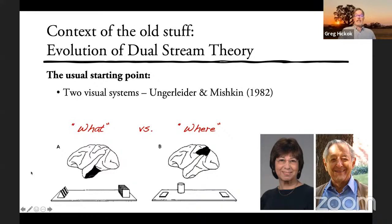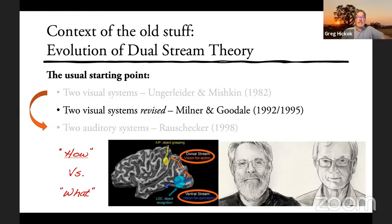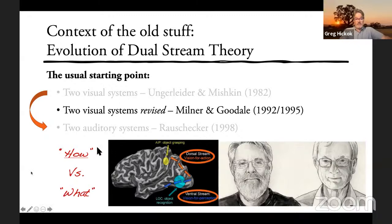This led to a similar view in the auditory system. Joseph Rauschecker proposed a what-where distinction in audition for macaque monkeys. But between these, Milner and Goodale revised the visual system model: the ventral stream remained a 'what' stream, but the dorsal stream was reconceptualized not just as location-based but as a system designed to map visual features of objects onto motor systems — how you grasp a cup, for example. This 'how versus what' framework directly influenced us in developing a dual stream model for speech.